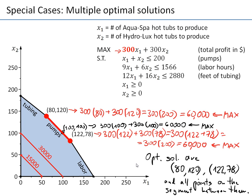In practice, you can think of other objectives that may help you decide which solution to adopt. For example, one such objective could be balanced production — having more or less equal values. In this case, (100, 100) could be considered a better solution because you are producing the same number of both products. Or we might have a preference for producing more Aqua Spas or more Hydroluxes. But from the perspective of this model, when the coefficient is changed to 300, the model has multiple optimal solutions, as indicated here.